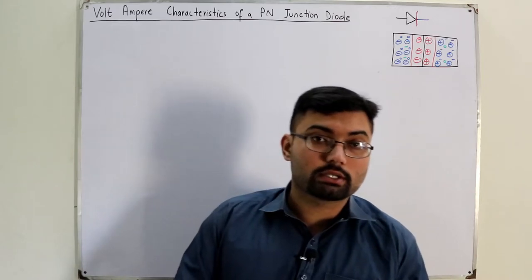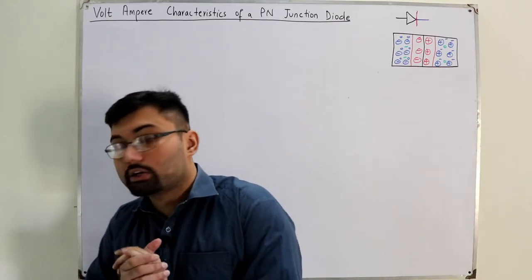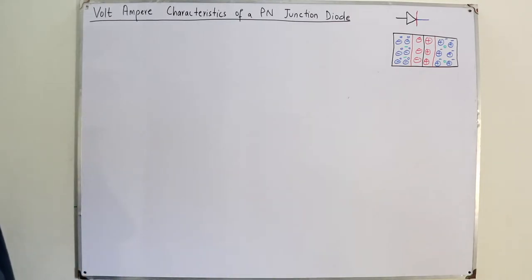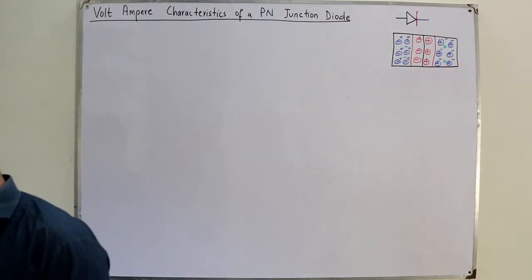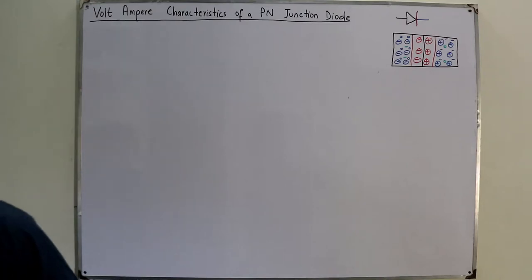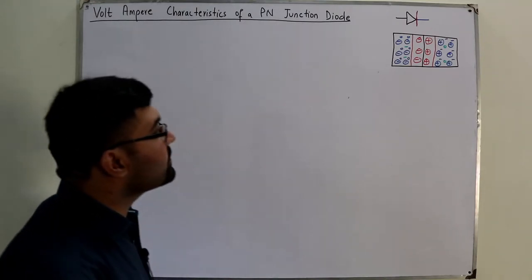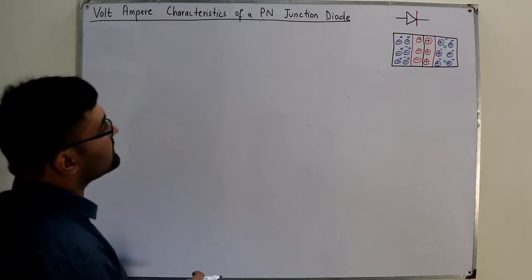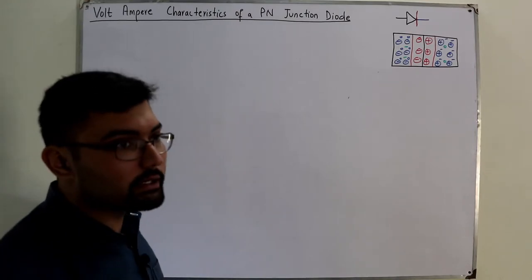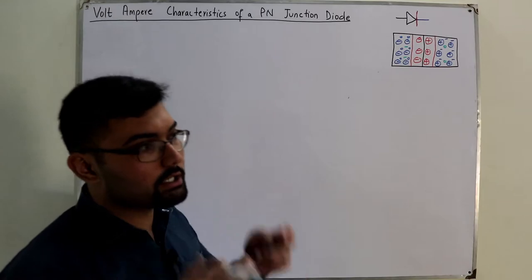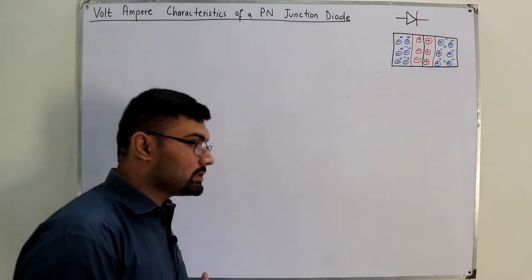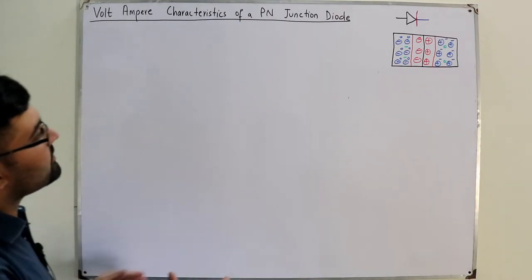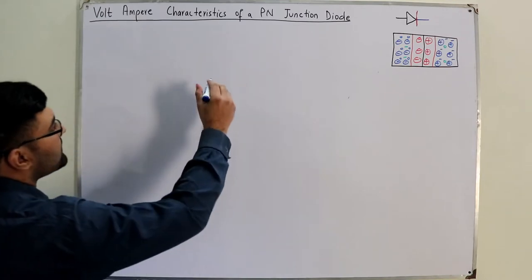The weather has significantly changed — it's quite cold and it rained heavily yesterday. Yesterday was also an important day in the sense that we won a cricket match by 10 wickets. I did not watch a single ball of it, but when I saw that we won by 10 wickets I felt quite happy. Anyways, the topic is the volt-ampere characteristics of the diode.